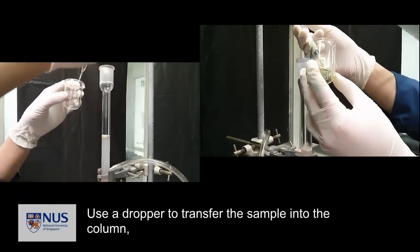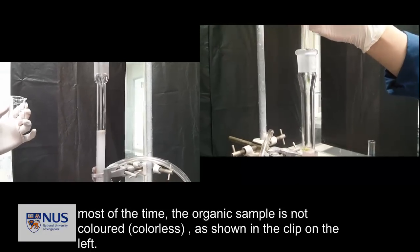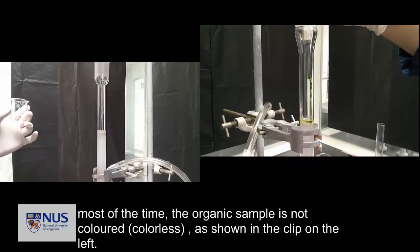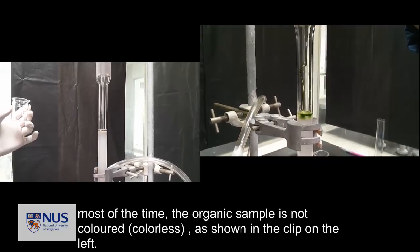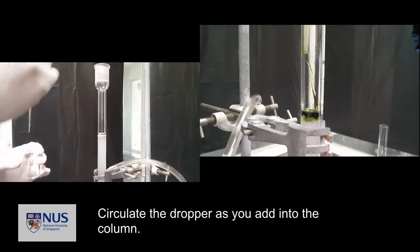Use the dropper to transfer the sample into the column. Most of the time, the organic sample is not colored as shown on the clip on the left.